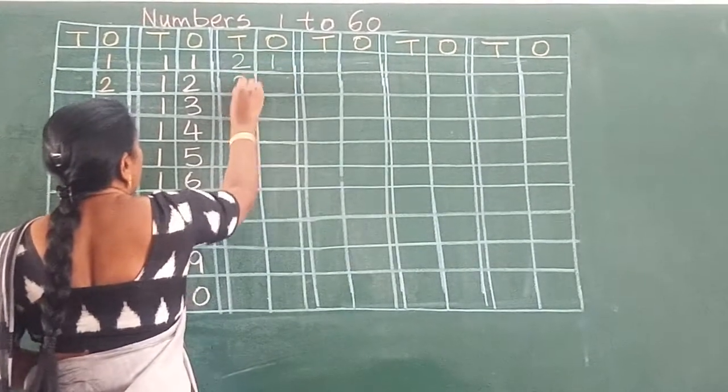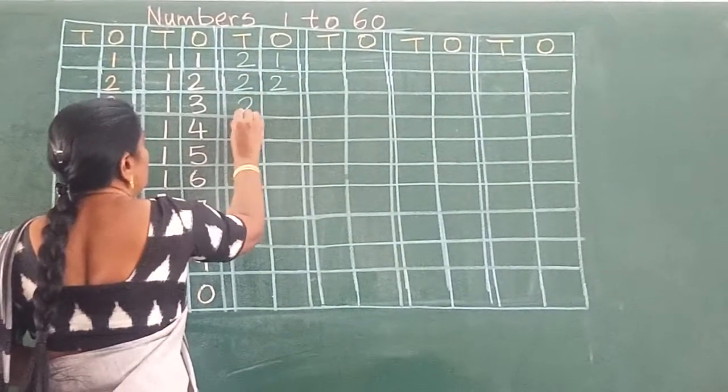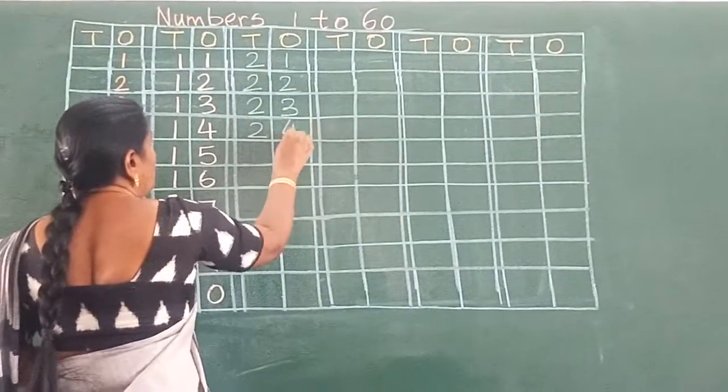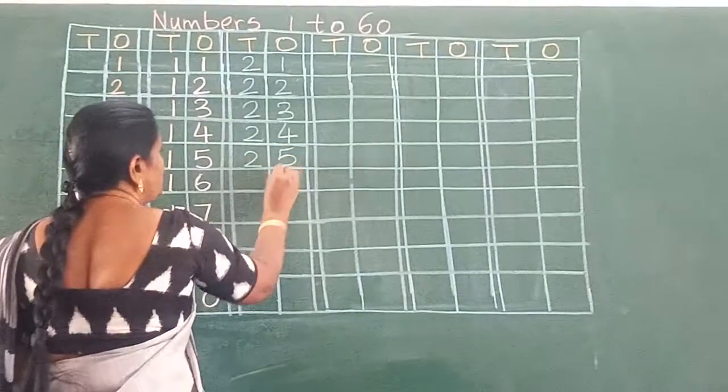2, 1, 21. 2, 2, 22. 2, 3, 23. 2, 4, 24. 2, 5, 25.